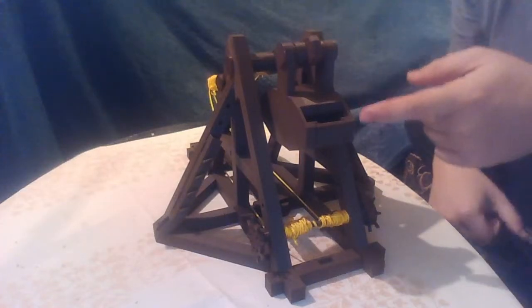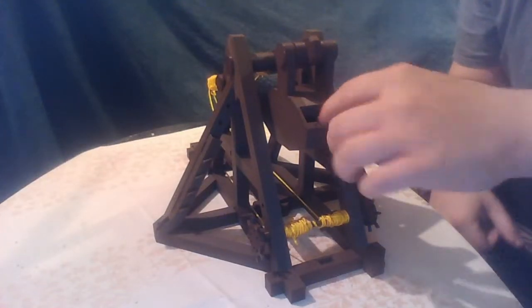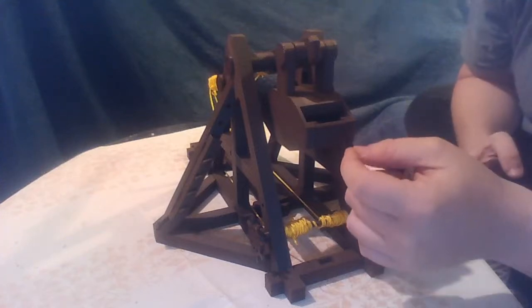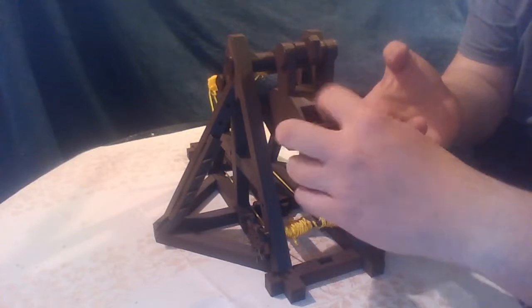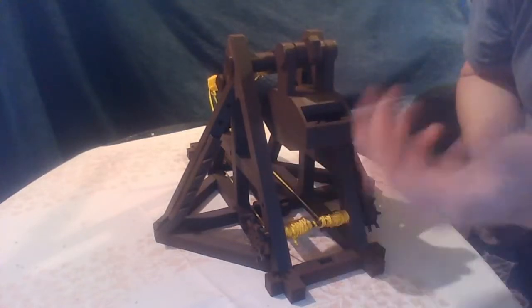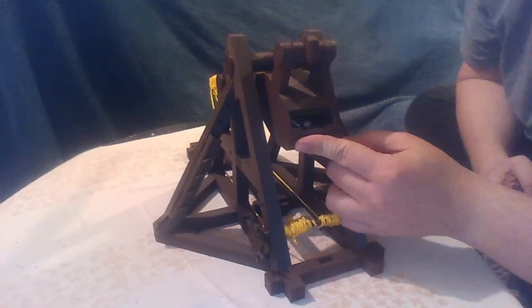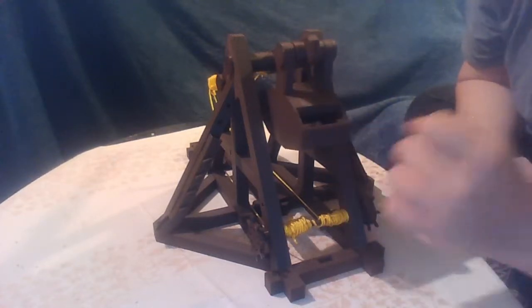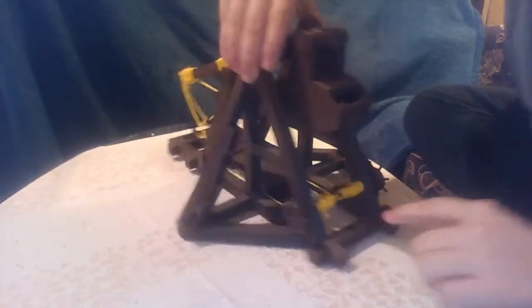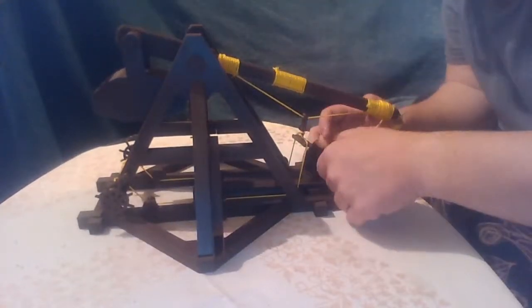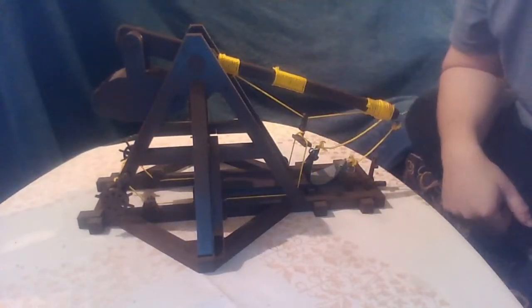Now, the counterweight here is filled with the fishing counterweight. It's filled with them, and as you can see here, it gives enough counterweight for the Trebuchet to actually fire. Now, we will take a look at how it works.